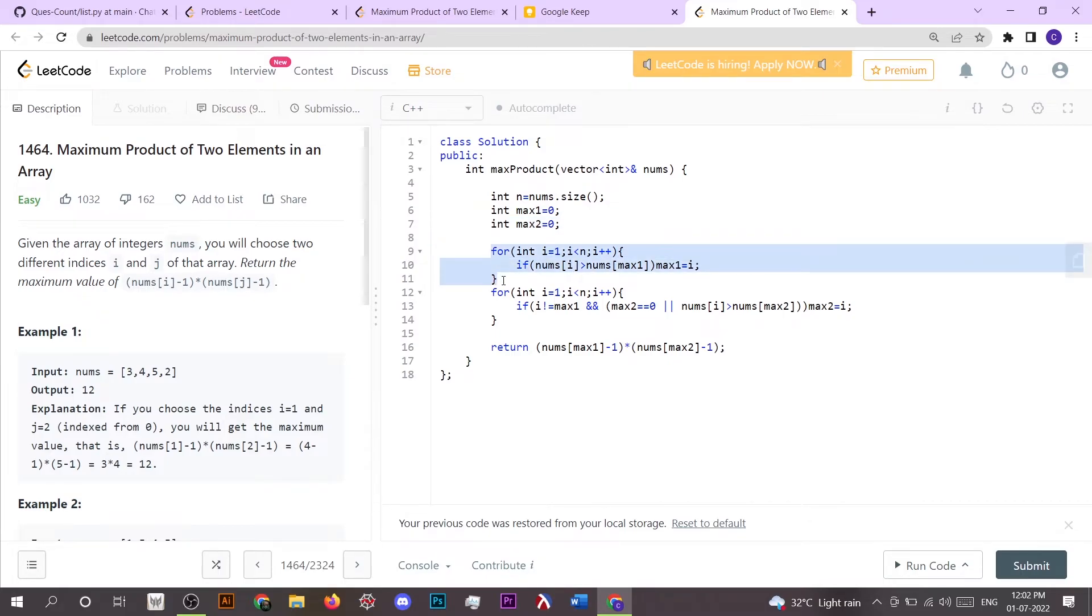After running this for loop, I got the maximum index of the maximum value inside that nums. Then for getting the second maximum value index, I check if the i value not equal to max1 and our max2 equals 0.